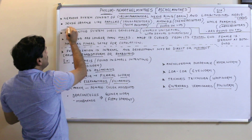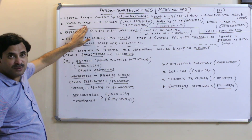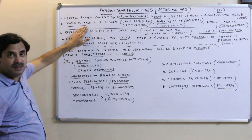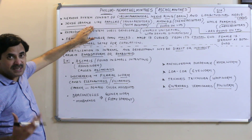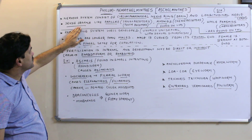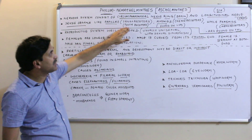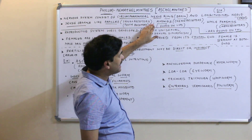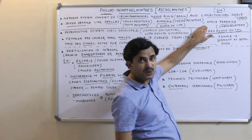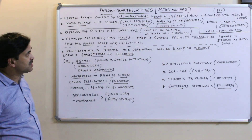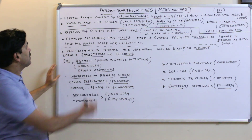Sense organs are well developed in Aschelminthes. Papillae serve as tangoreceptors (touch receptors). Amphids are chemoreceptors found on the lips, and phasmids are also chemoreceptors found on the tail region.